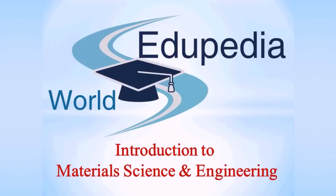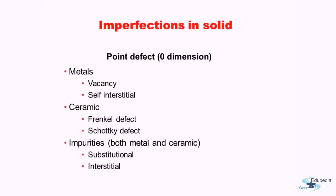Hi everyone, welcome back to the course on Introduction to Material Science and Engineering offered by Eripedia World. In the previous lecture, I introduced the concept of imperfections in solids — we discussed 0D, 1D, 2D, and 3D types of imperfections. Today I will go in depth into the 0D or point defects. This is a revision slide in which we discussed point defects in metals.